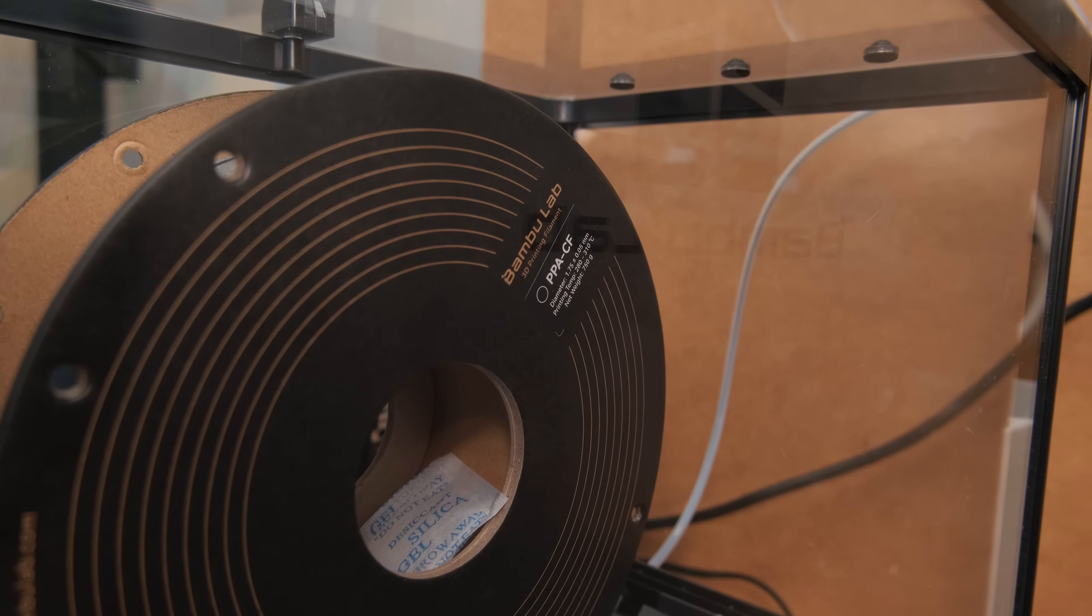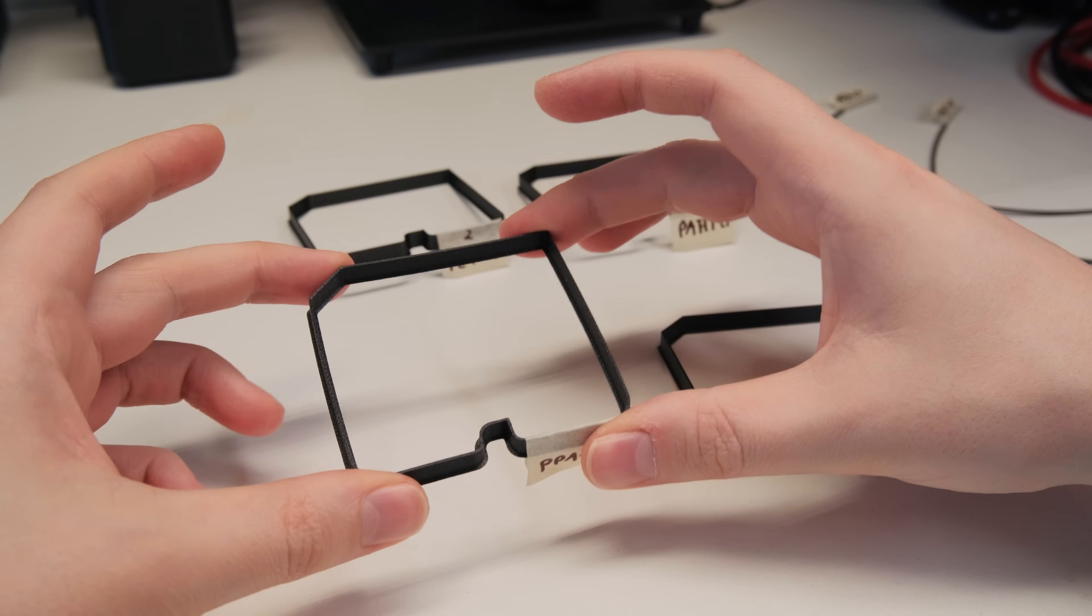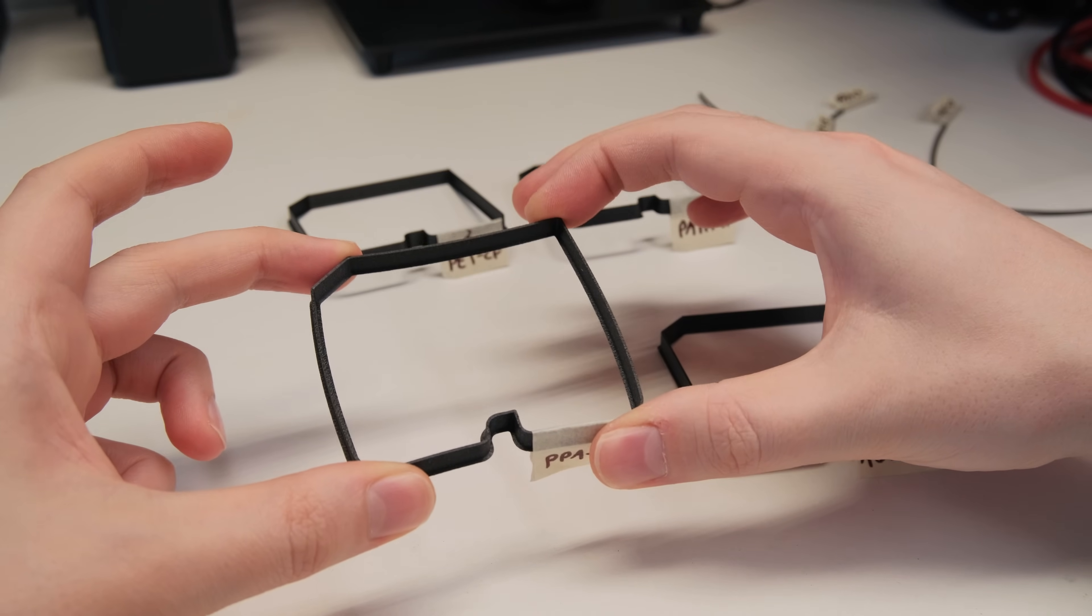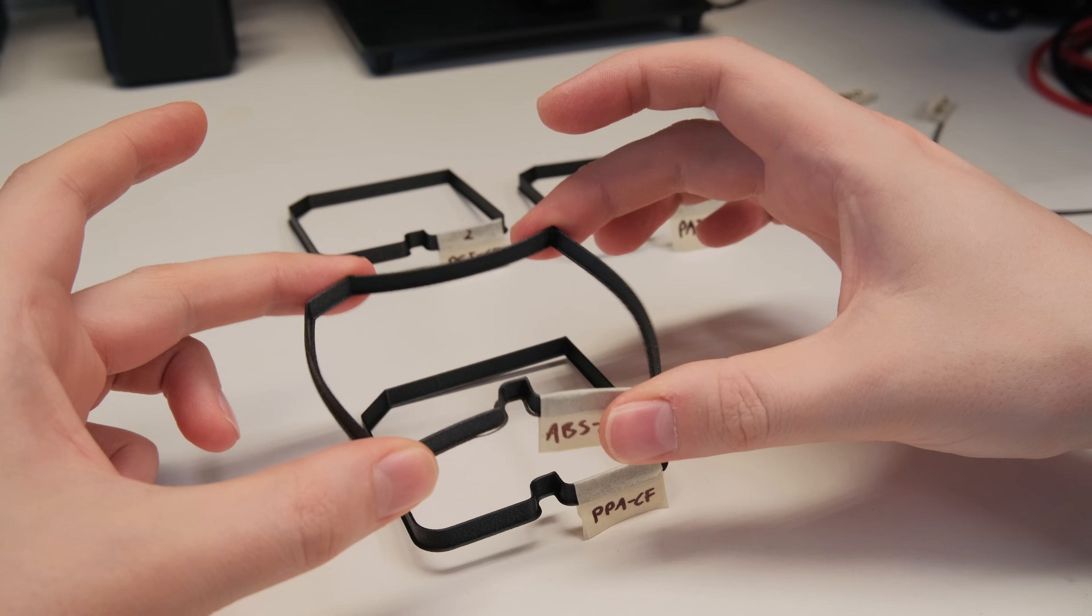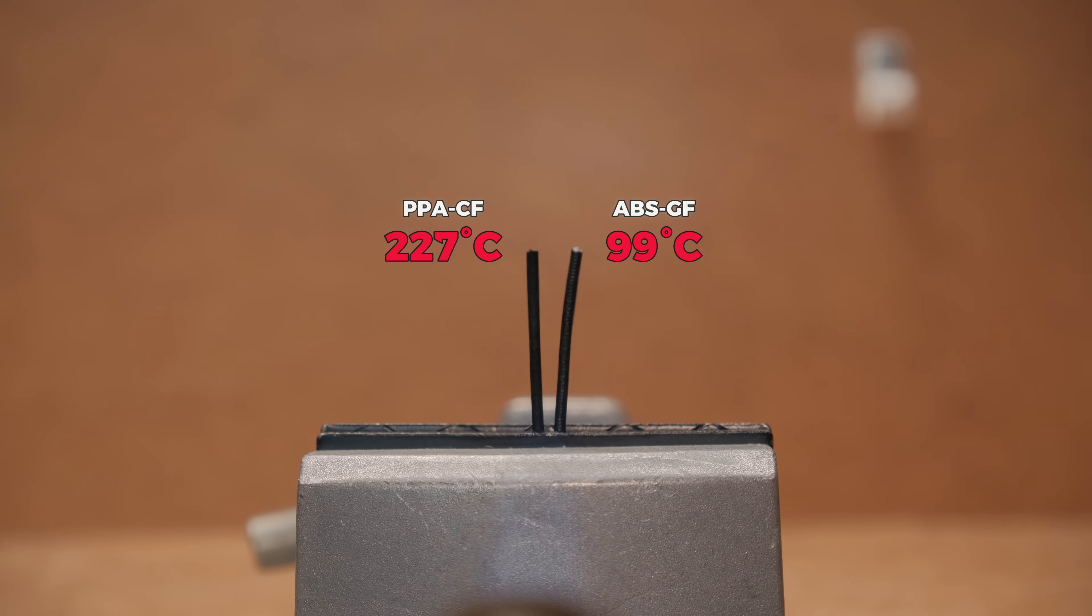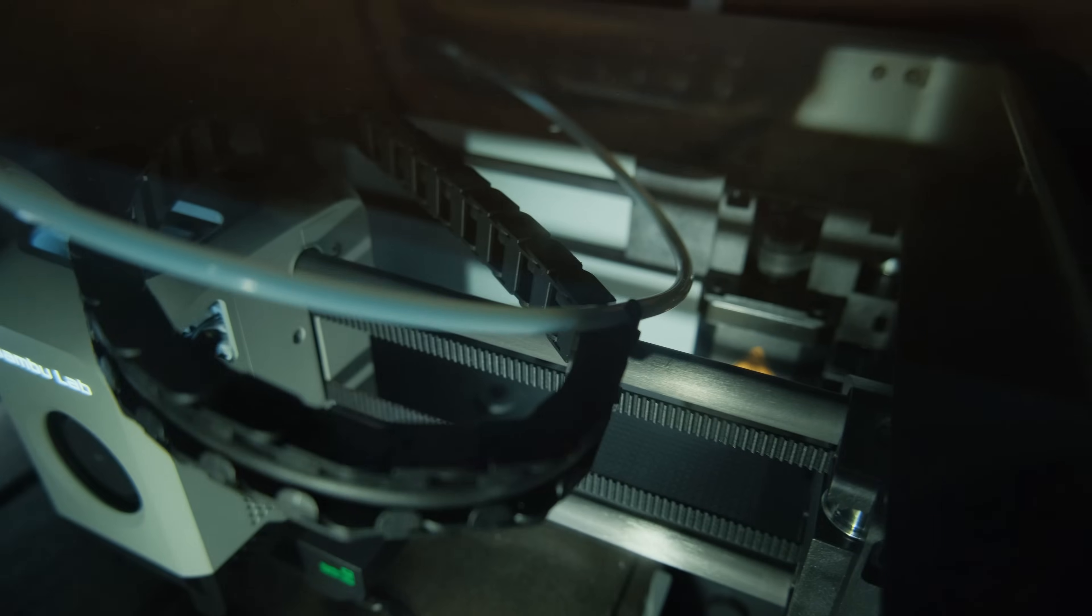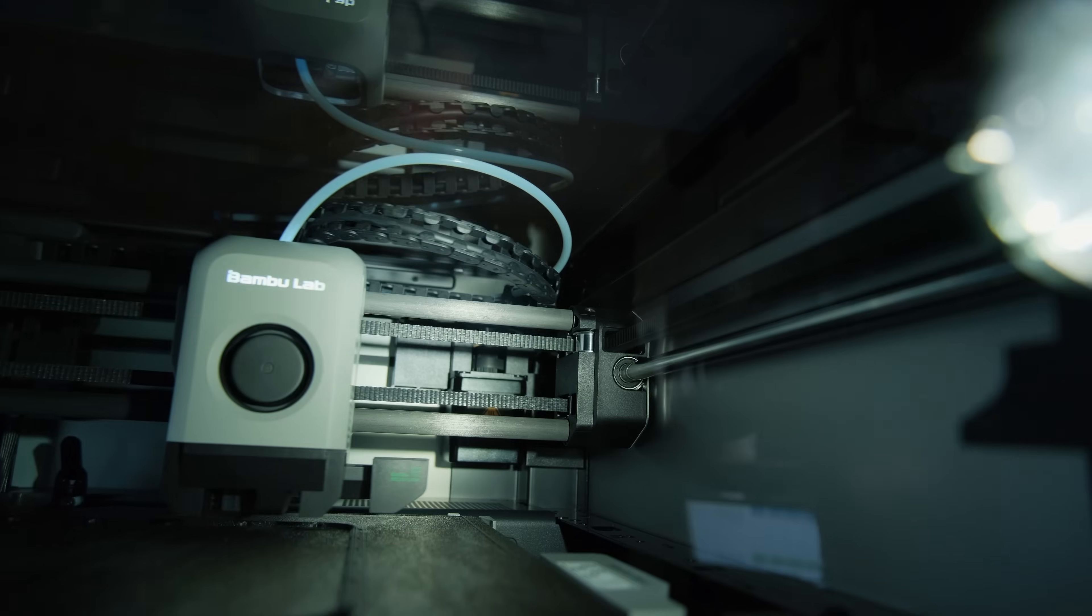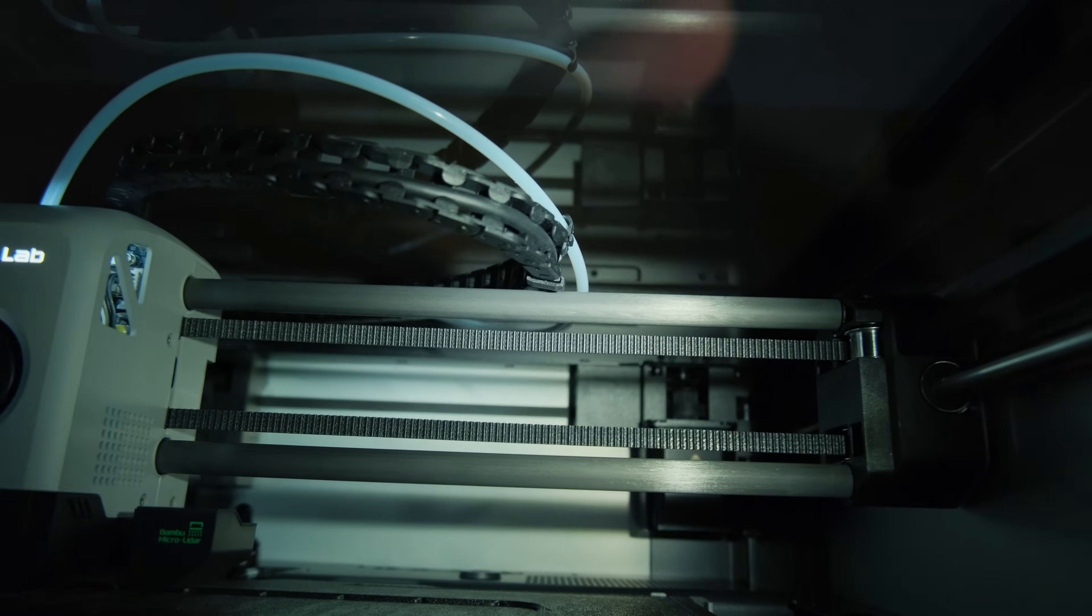When it comes to filaments, the one that stood out the most was the PPA-CF with its incredible stiffness and decent layer adhesion. It might allow you to skip using aluminum and print the parts in plastic, something other filaments just aren't stiff enough for. Combined with a very high temperature resistance, this filament is great if you truly need these properties for your prints. My only concern is because it is so stiff, in my case it started bending the drag chain on the X1C to a point where it started rubbing on the carbon rods, which is definitely not ideal.